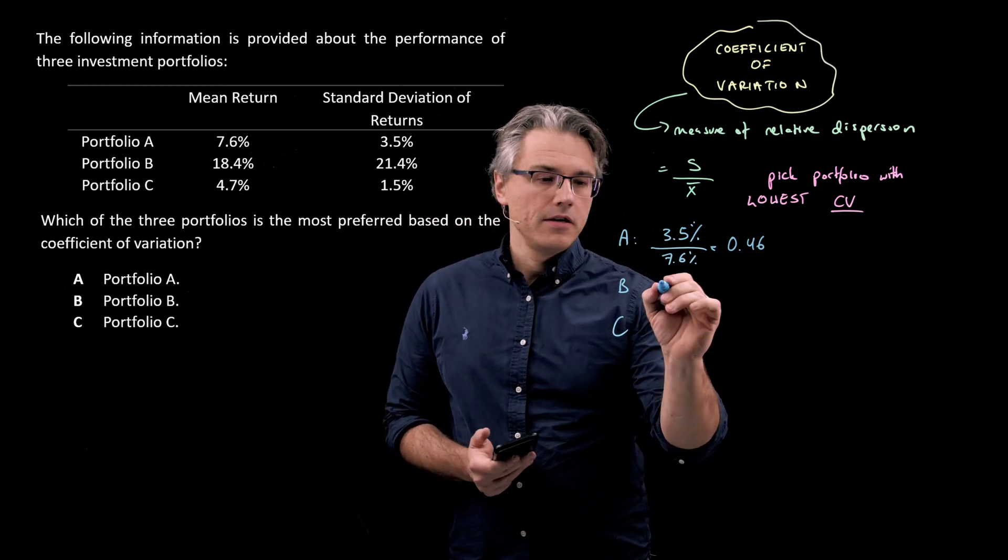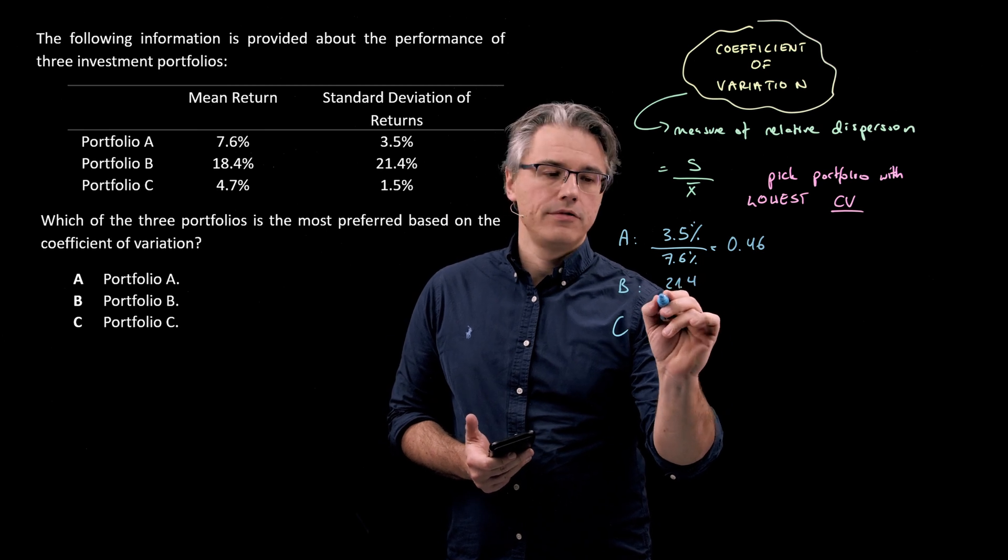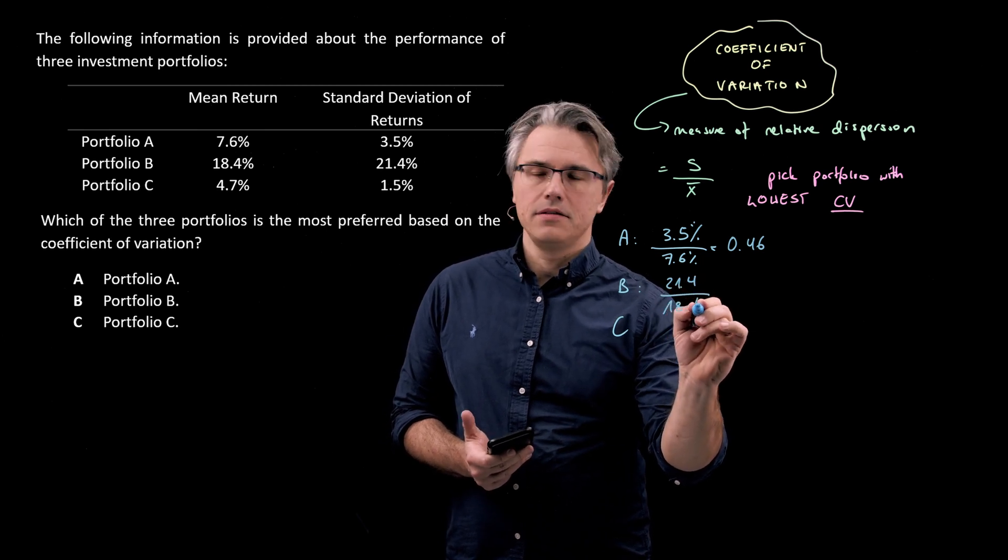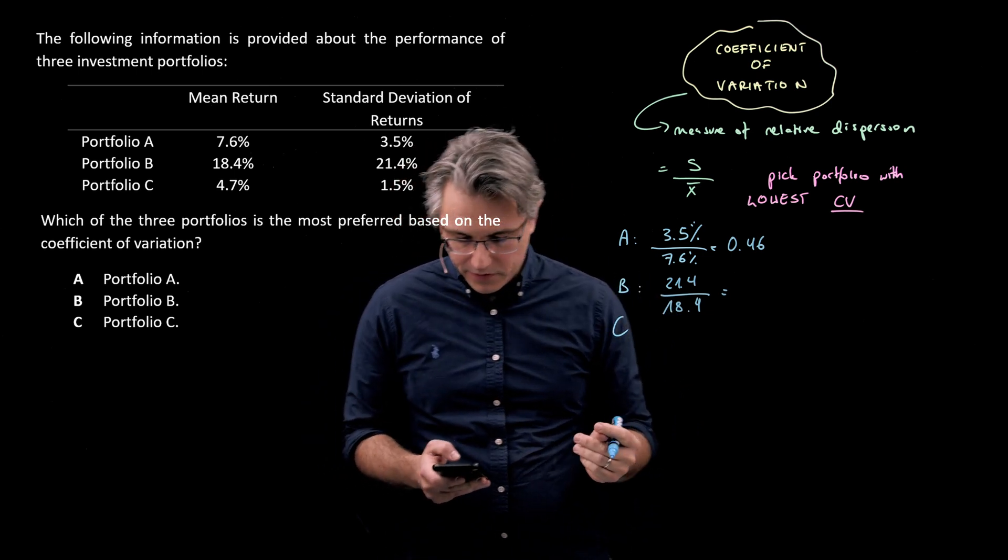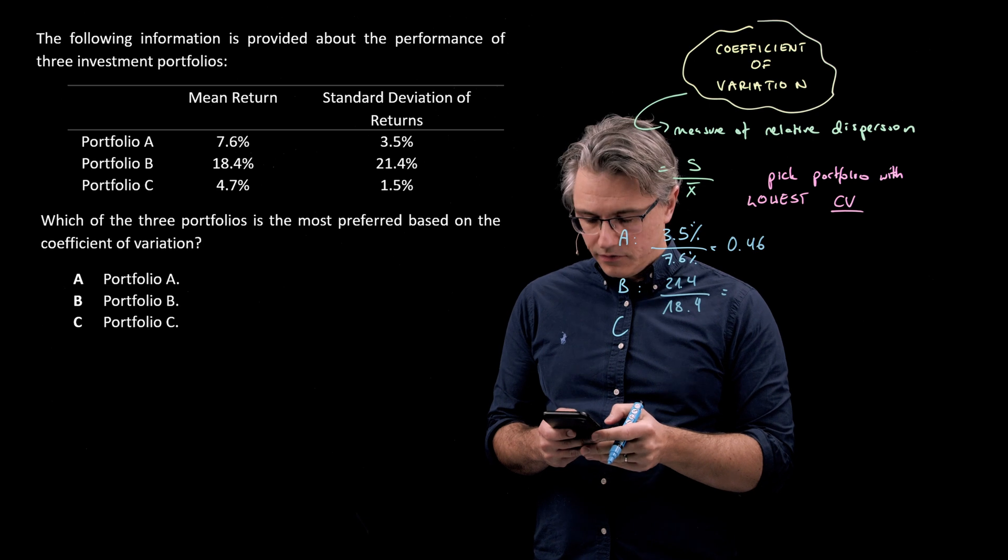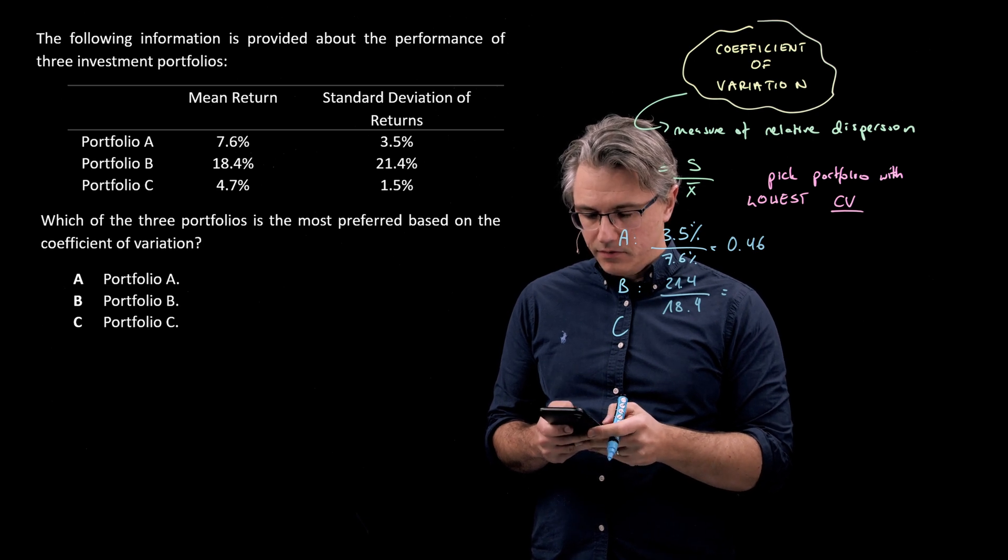For B, I'm going to have 21.4 divided by 18.4. Okay, this is 1.16.